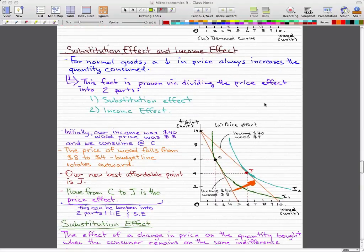So let's go through what we initially thought. Initially our income was $40 and our wood price was $8. This is an example I've been using for the past couple of videos, and we consume at point C. Now the price of wood falls from $8 to $4, and we know that the budget line would rotate upward to meet point J on indifference curve I2. So our new best affordable point is J. The move from C to J is what we call the price effect, and this can be broken into two parts: the income effect and the substitution effect.